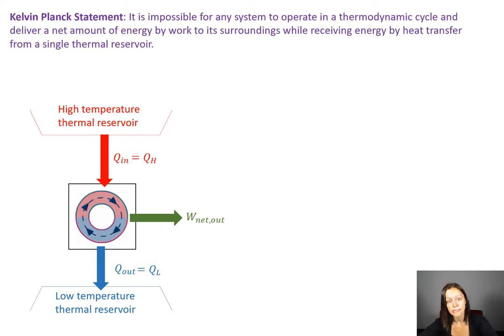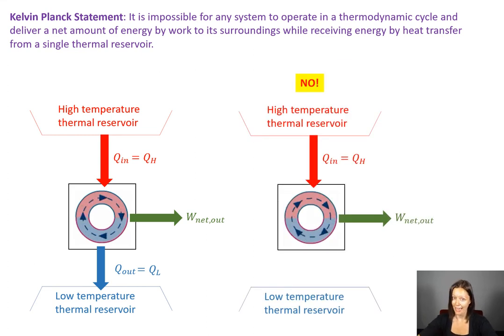And the Kelvin Planck statement says that it can't deliver a net amount of work to its surrounding while receiving energy from a single thermal reservoir. So what it tells you is that you have to dump heat into that low temperature reservoir. You have to have some amount of waste heat so that Q out or that Q L has to be something other than zero.